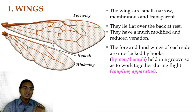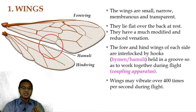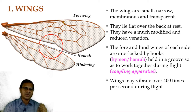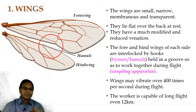We call the order Hymenoptera because 'hymen' means hooks or hamuli are present, and 'tera' means wings — wings bearing hamuli. These hamuli interlock with the forewing to form the coupling apparatus. This coupling apparatus is important for effective flight; due to it, wings may vibrate over 400 times per second. This flight is important for foraging — collection of pollen and nectar when visiting different flowers. The worker is capable of long flight, even 12 kilometers, due to strong musculature and the coupling apparatus.